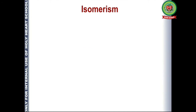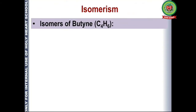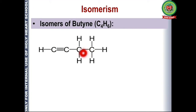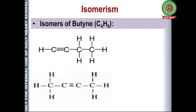The next topic is isomerism in alkynes. We will take the example of butyne, having molecular formula C₄H₆. First we draw four carbons, and to one of the carbons we draw the triple bond. If you draw the triple bond on the left side, it is at the first position. If you start from the right-hand side, numbering also starts from that side, so it again comes to the first position. We can then shift the triple bond to the second carbon, and the position changes.